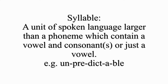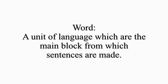The second unit of Linguistics is syllable. A unit of spoken language larger than a phoneme, which contains a vowel and consonant or just a vowel, is known as a syllable. For example, in the word 'unpredictable', the syllables are un-pre-dic-ta-ble. So the word 'unpredictable' has 5 syllables. The third and last unit of Linguistics is word.